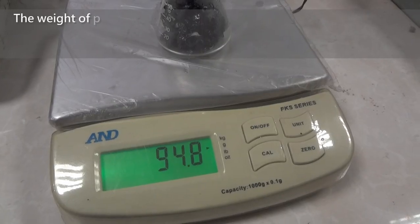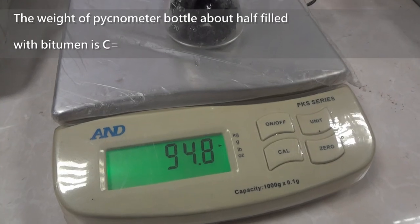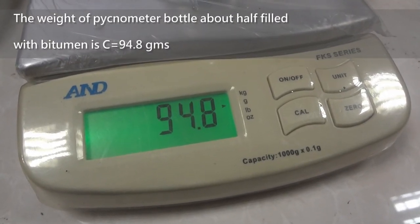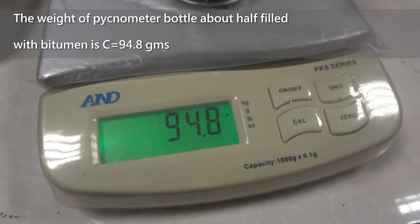Now weigh the pycnometer bottle about half filled with bitumen. The weight is 94.8 grams, which is C.